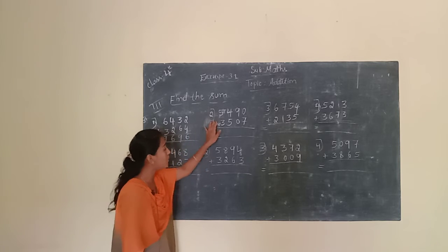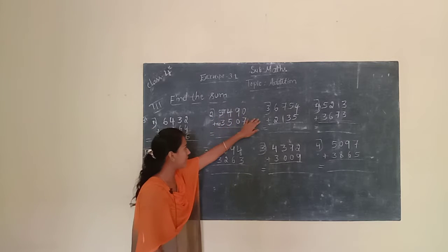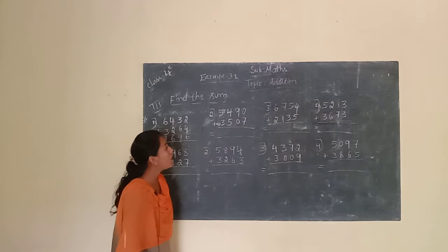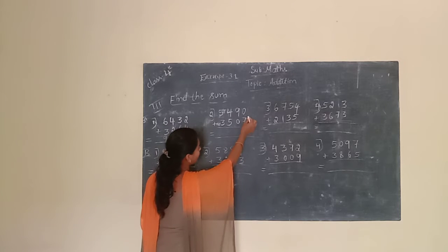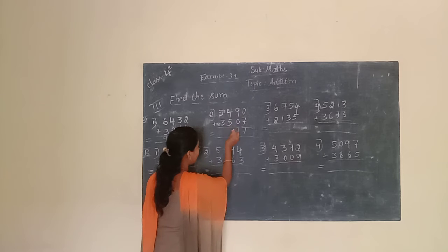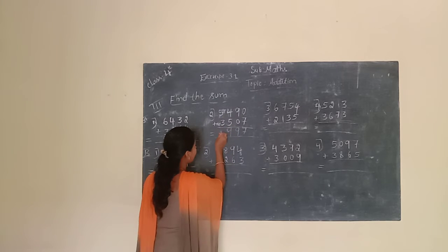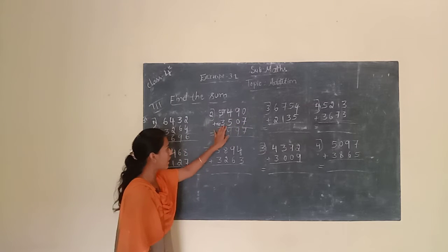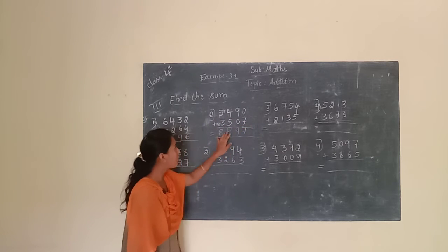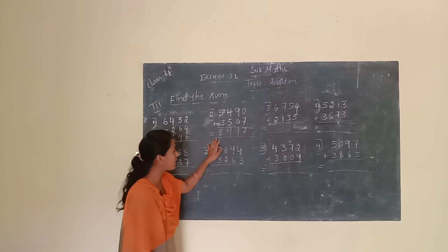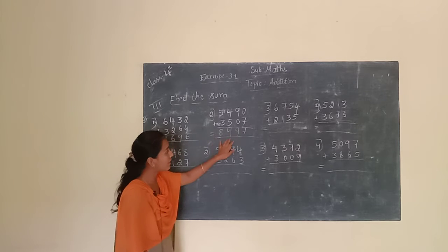Next, give one more example. The given number is 5,490 plus 3,507. Now we have to add. First, we have to start at the unit place. 0 plus 7 is 7. 9 plus 0 is 9. 4 plus 5 is 9. 5 plus 3 is 8. So 5,490 plus 3,507 equals 8,997.